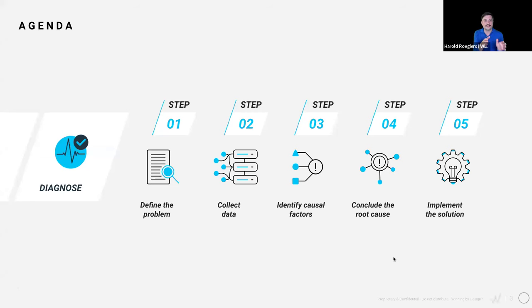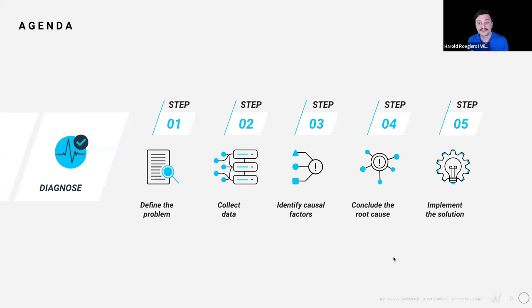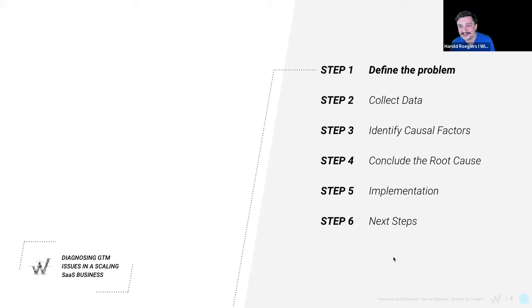The agenda for today follows five simple steps — the very same steps we use to diagnose a customer's problem. First, define the problem. Then collect data. With that data, identify hypotheses and causal factors. Testing those hypotheses lets you conclude the root cause. Once you have the root cause, that's the moment you can start thinking about solutions and begin the heavy lifting of implementing them. Roey, why don't you take us to step one: defining the problem.